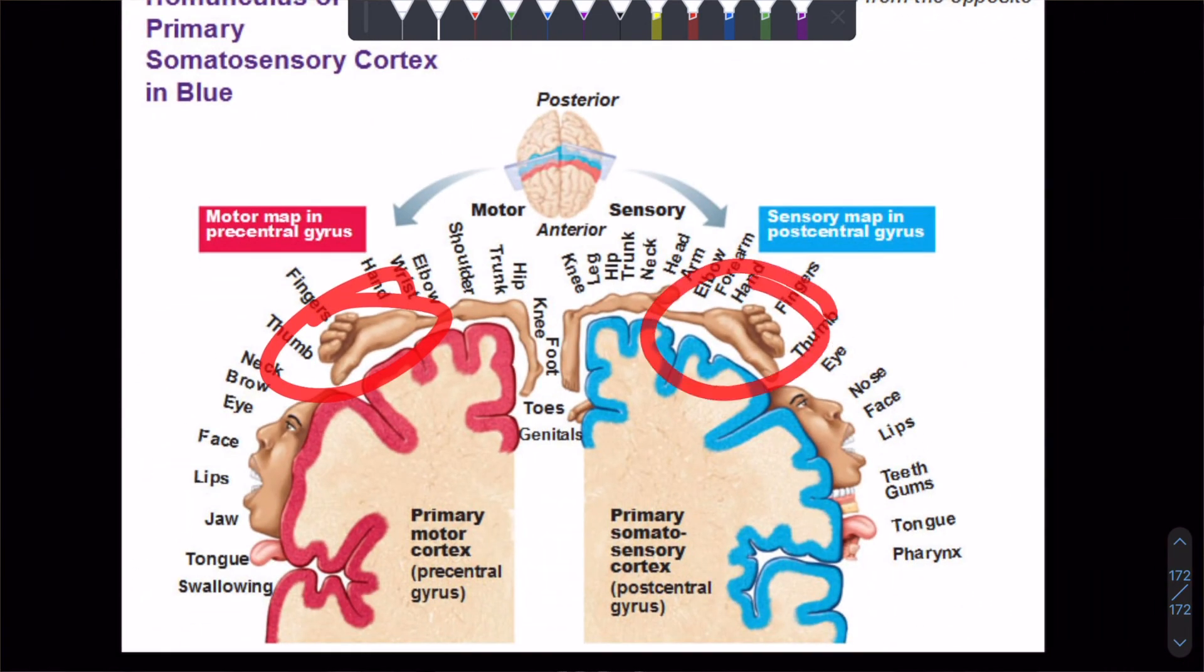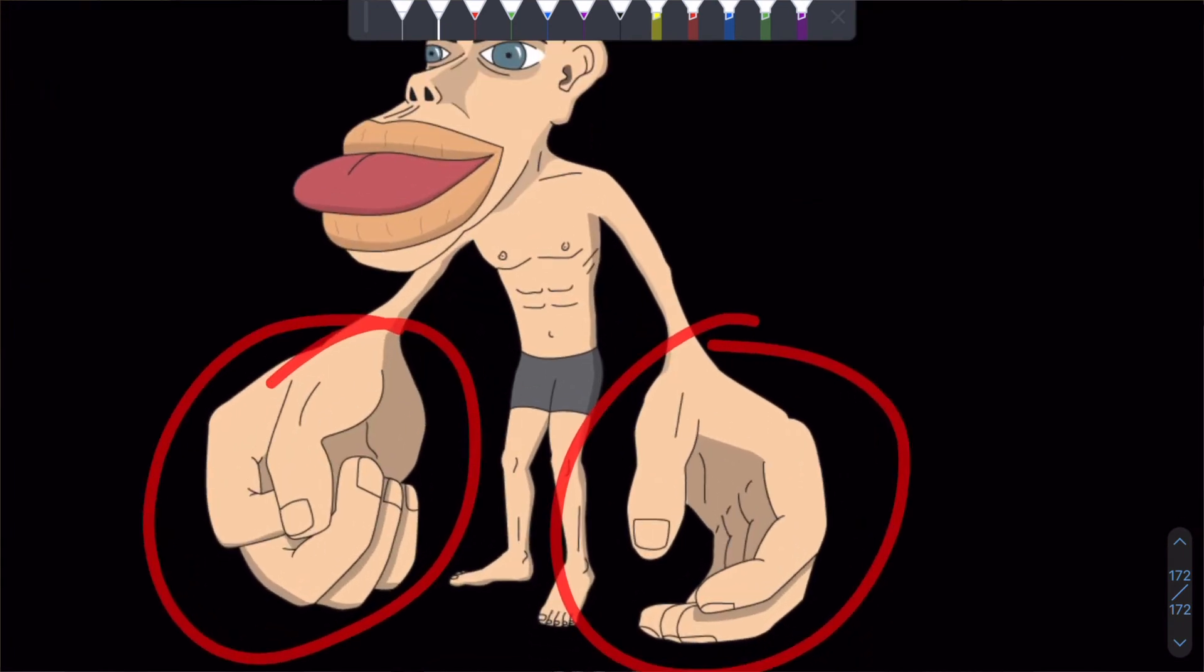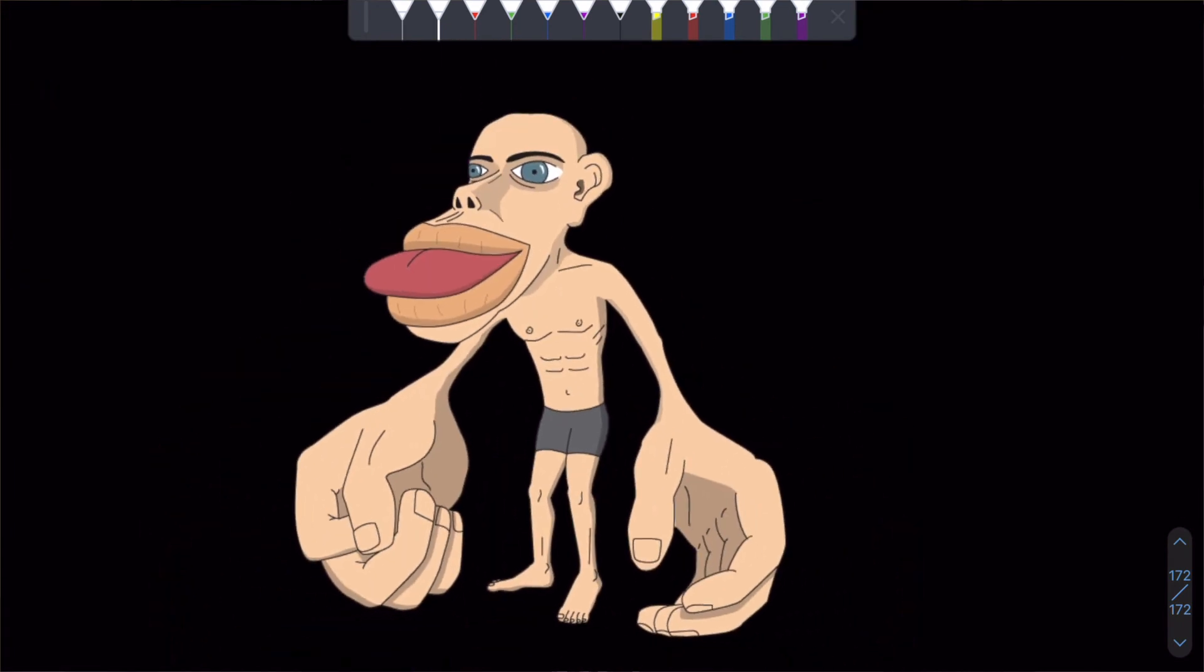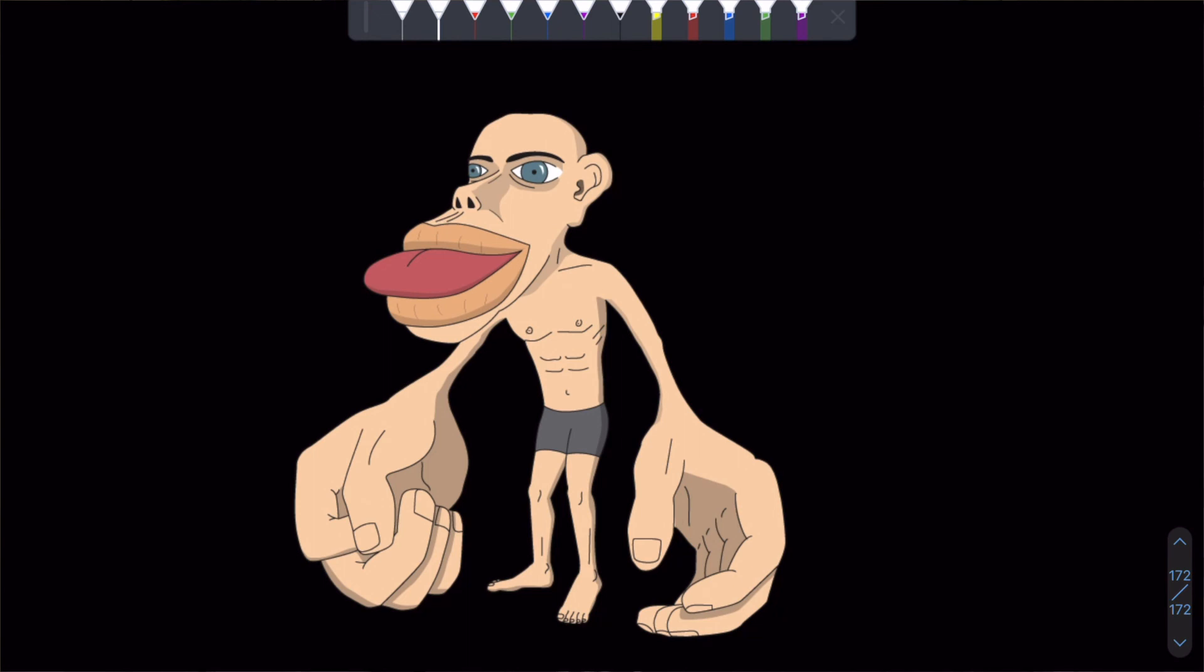The hands are represented as bigger. That's what they're doing with this - they're making a human. And this is called the homunculus. Just search it. Google search it and you'll find tons of them. But this is the homunculus human.